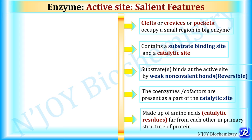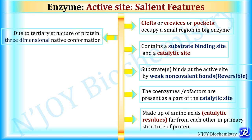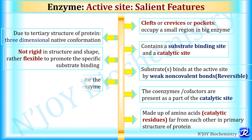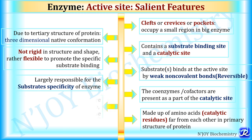Coenzymes and cofactors are present as part of the catalytic site, and the active site is made up of amino acids known as catalytic residues which are far from each other in the linear sequence — the primary structure of the protein. For example, the enzyme lysozyme has 129 amino acids and the active site is formed by amino acid residues numbered 35, 52, 62, 63, and 101. The active site exists due to the tertiary structure of the protein resulting in a three-dimensional native conformation, and it is flexible — not rigid — to promote specific substrate binding.